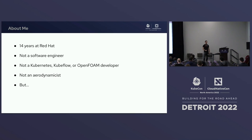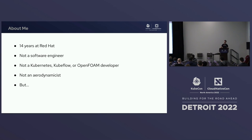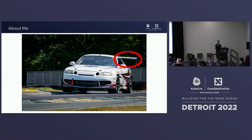How did we get here? I've been at Red Hat for 14 and a half years. I'm not a software engineer; I'm not a Kubernetes, Kubeflow, or OpenFoam developer. I'm not an aerodynamicist. But I do have a race car, and it does have a wing on it.